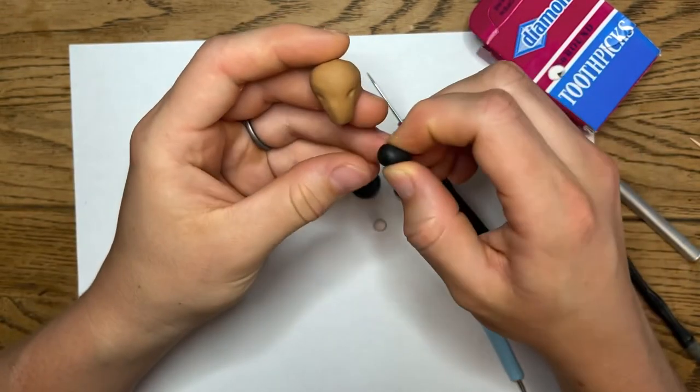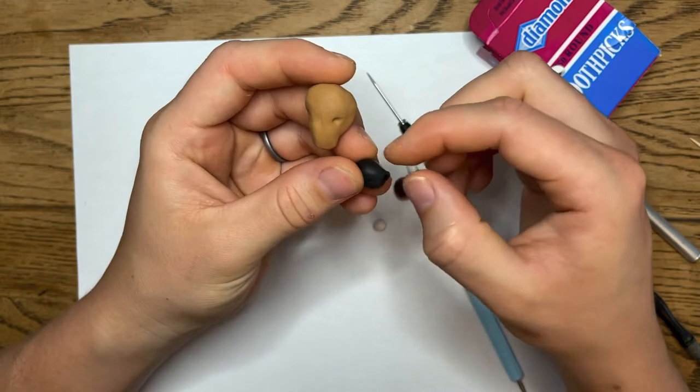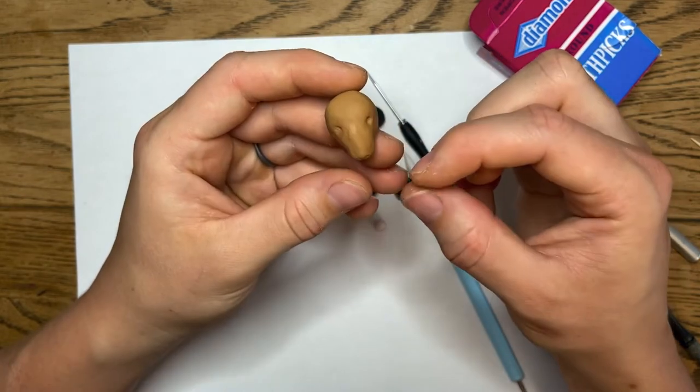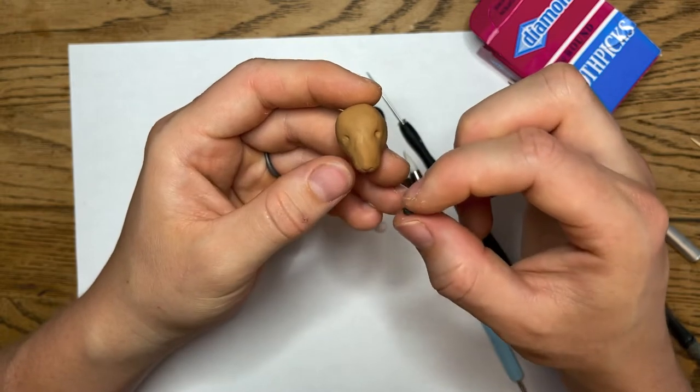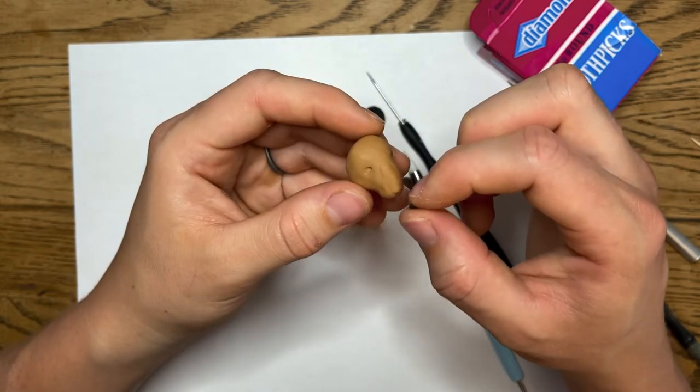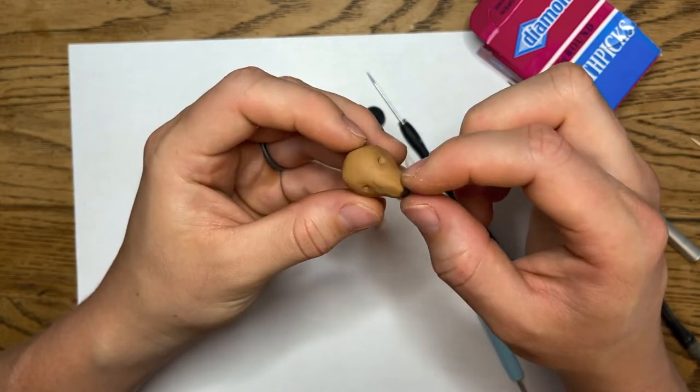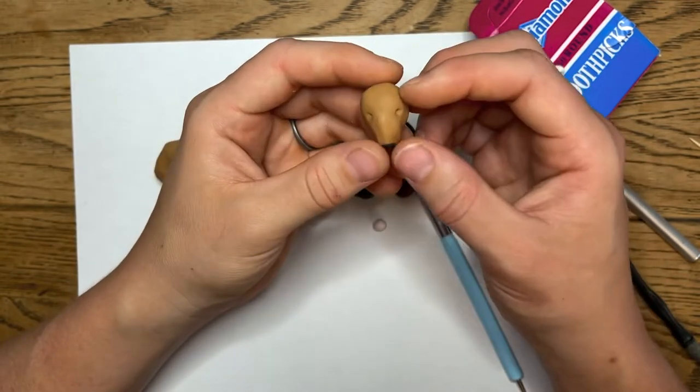Alright, there's that. Take the black and take about as much as you think might fit in the eye. Roll it into a ball. Pinch it between your fingers to make a triangle. Tap the bottom and then flatten it. Set it right there. Now, set that down. We're going to do the ears before we do the eyes.